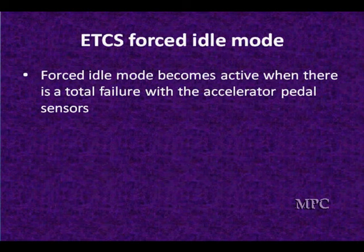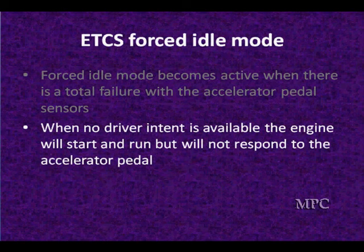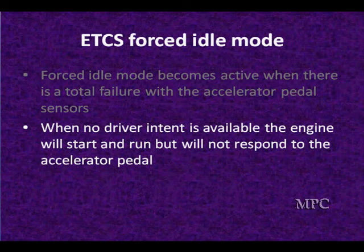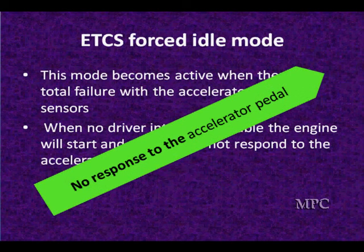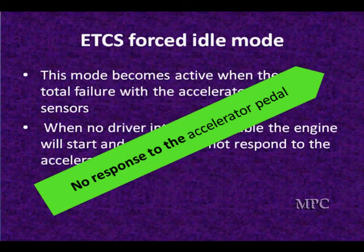Forced idle mode becomes active when there's a total failure of the accelerator pedal sensors — meaning the system has no idea what they are. Both pedal position sensors are out of range. This commonly happens when you lose power or ground common to both sensors. In this mode, with no driver intent available, the engine will start and run but will not respond to the accelerator pedal. In some older systems, you may also have a communications failure between the PCM and the external module for accelerator actuator control.